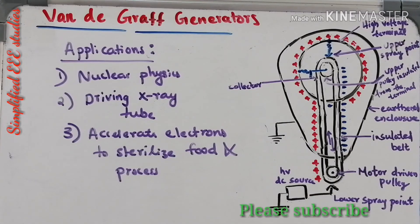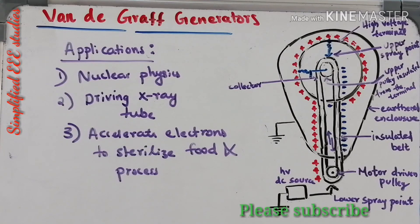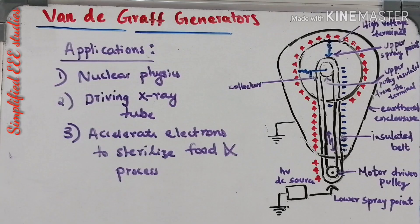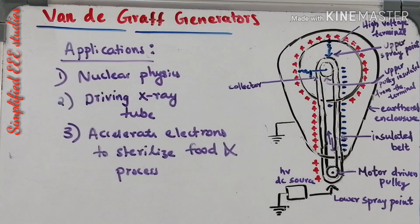I hope you understood what is the Van de Graaff generator, its working principles, how it operates with the help of a diagram, the mathematical expression for the rate of rise of voltage at the high voltage electrode — dV/dt = I/C — and its applications. Thanks for watching this video, please share and subscribe. Thank you.